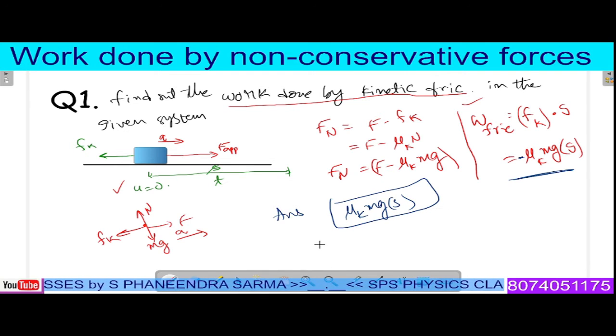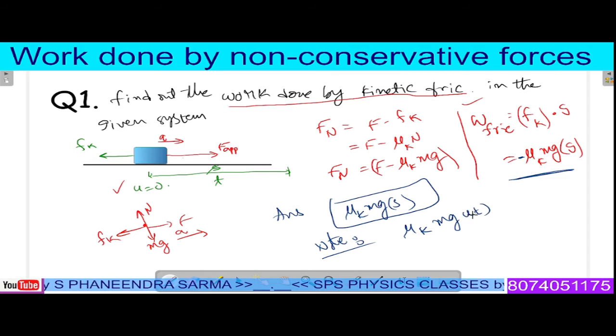One important condition: suppose you are applying force and it is uniformly moving, in such a case mu k mg times distance equals speed times time. Using this particular formula, one can also determine work done by kinetic friction either by displacing s units or moving with uniform speed.